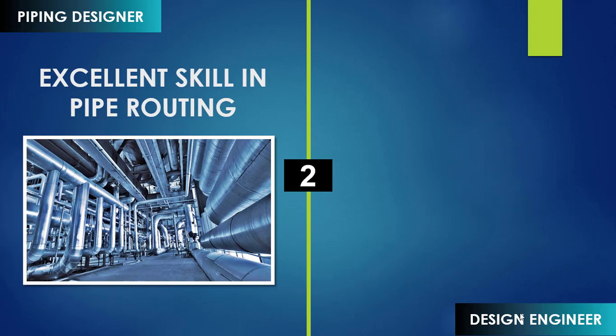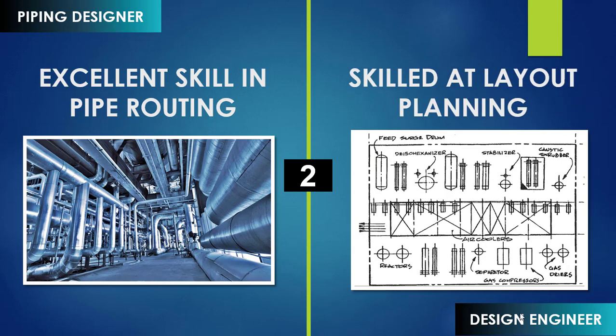Designers are considered to be exceptionally good at pipe routing and are highly capable of analyzing all the factors involved. They have an exceptional skill in doing this activity. When it comes to design engineers, they are really good at layout planning — the process of deciding where to place equipment, what should be the distance between equipment, where to lay the pipe rack, how to route the piping, and what are the maintenance access, free access, and safety access requirements.